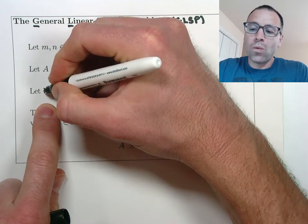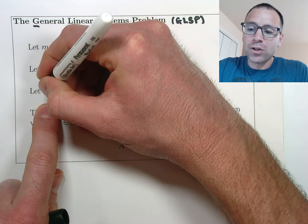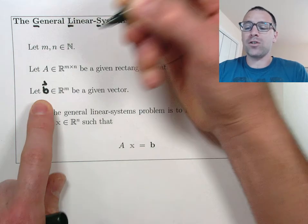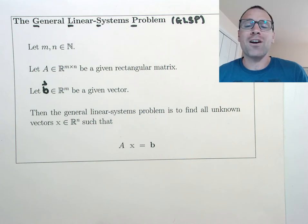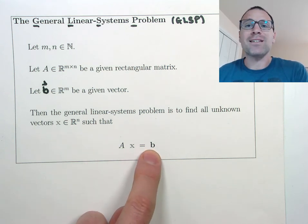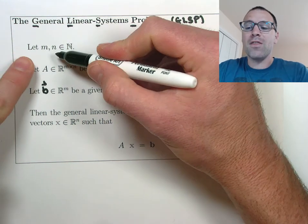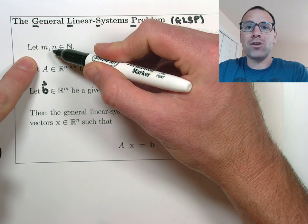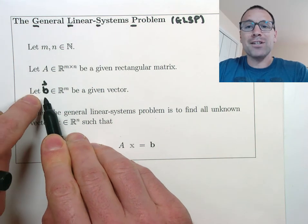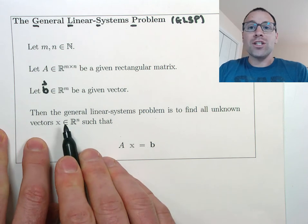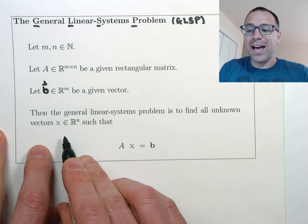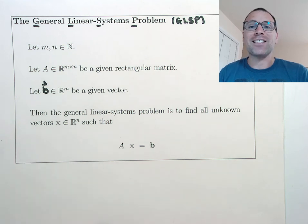When I'm typing vectors, I use boldface type. If I was physically writing this, I try to put a little vector hat on top. When you see typed work with boldface, that means it's a vector. So we're given the dimensions of both matrices and vectors — a single matrix A and a single vector B. The general linear systems problem is to find all unknown vectors X such that AX equals B.